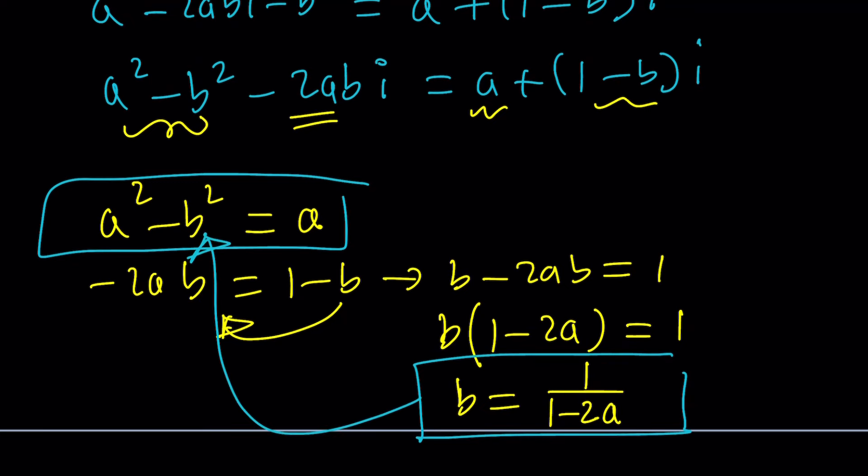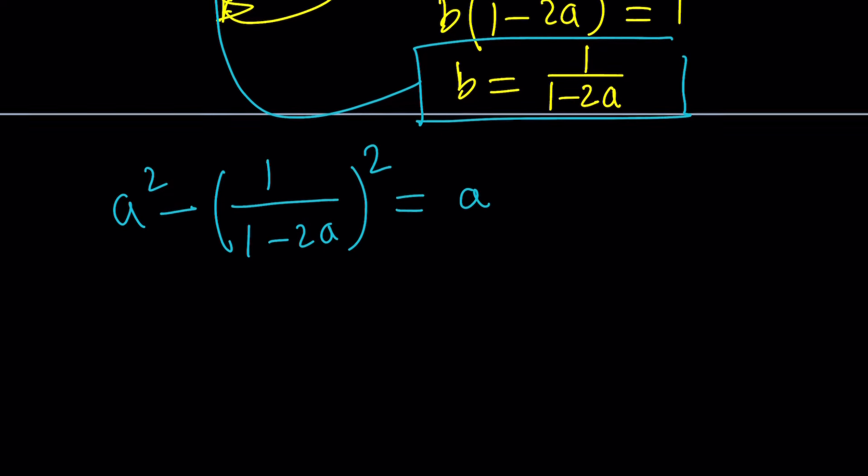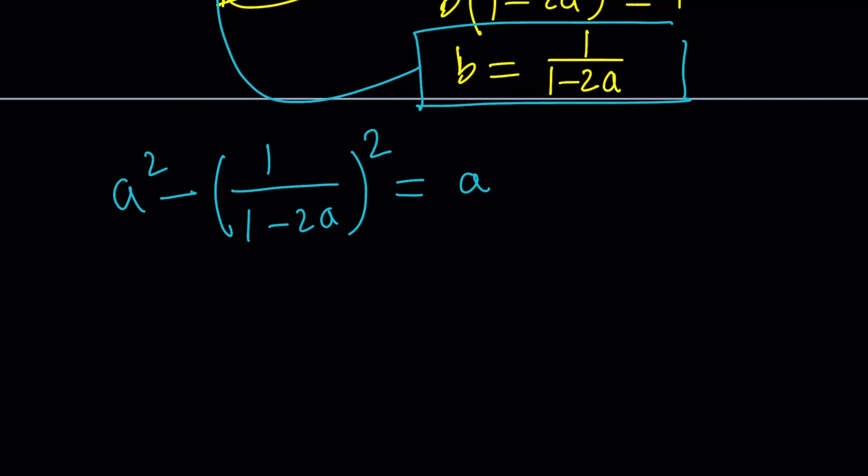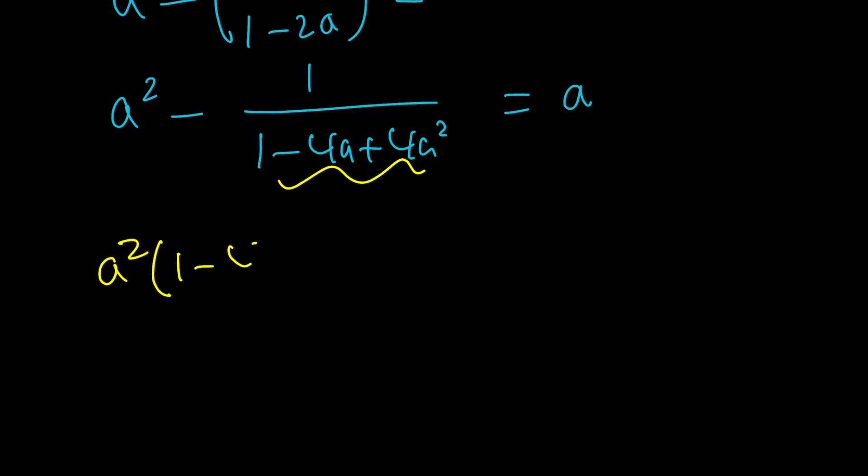Let's see what happens when I do a squared minus b squared, which is this whole thing squared equals a. Notice our equation is in only a single variable. This is going to turn into a quartic. We're going to square this: 1 minus 4a plus 4a squared equals a. In other words, we're going to multiply both sides by this. So it's going to look like this: a squared multiplied by this, minus when we multiply by that, we're going to end up with minus one. And on the right hand side, we're going to multiply a by the denominator.